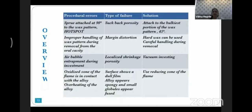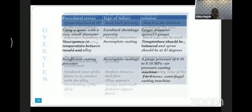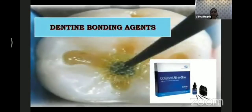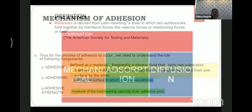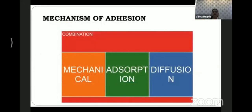A table of procedural errors, type of failures, and solutions is very important for exam purposes. Moving to the next topic — dentine bonding agents. Adhesion is derived from the Latin meaning a state in which two surfaces are held together by interfacial forces such as valence forces or interlocking forces, or both. The three important components are the adhesive, the adherent, and the adhesive strength. Mechanism of adhesion is by adsorption, diffusion, or mechanical interlocking.